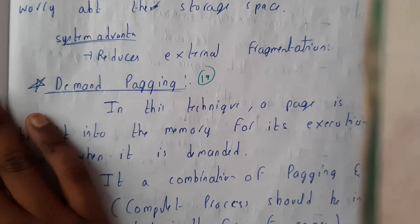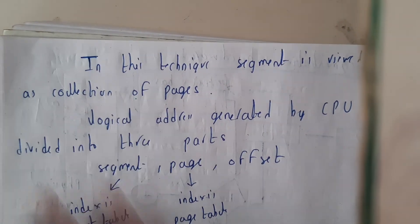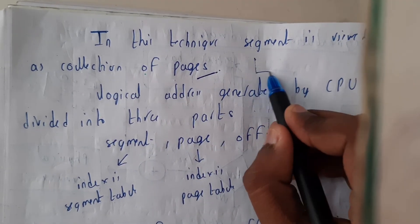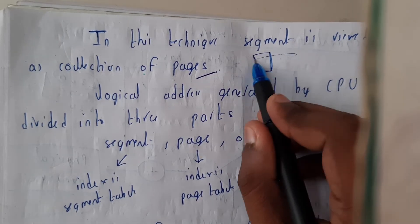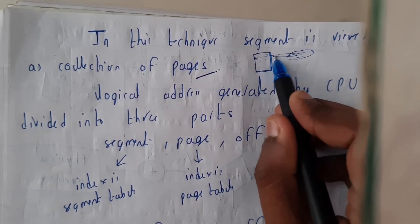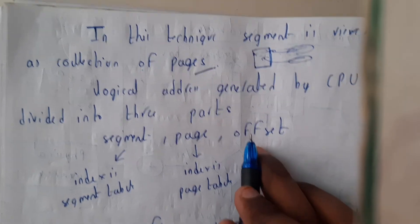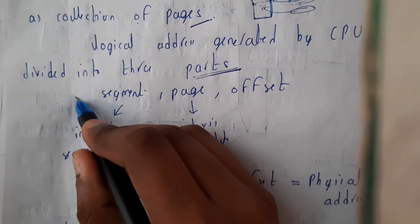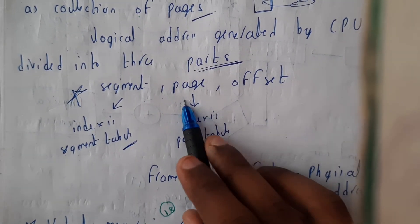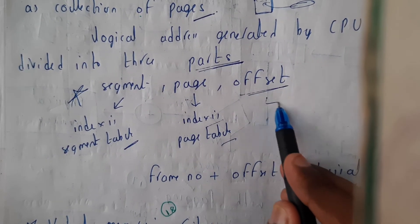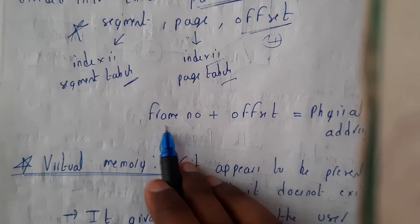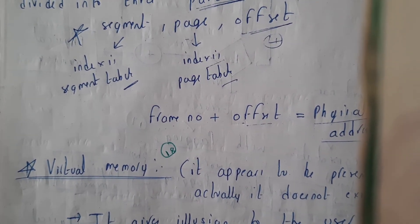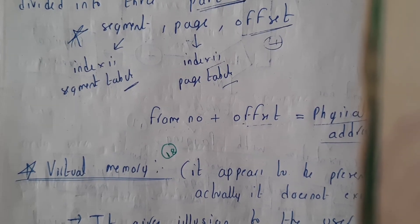In this technique, segmentation is viewed as a collection of pages. The logical address generated by the CPU is divided into three parts: segment (index of the segment table), page (index of the page table), and offset (the particular address or location). At the end, frame number plus offset equals the physical address. In the next tutorial we will be going through virtual memory. Thank you, thanks for watching.